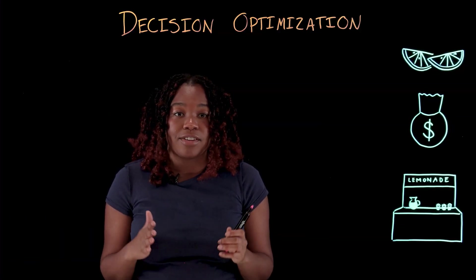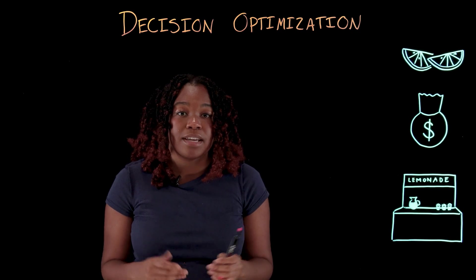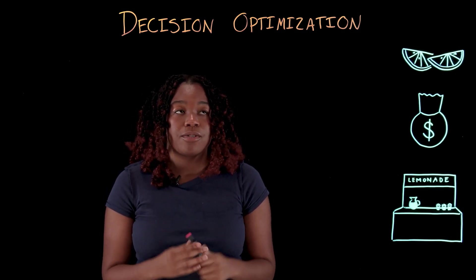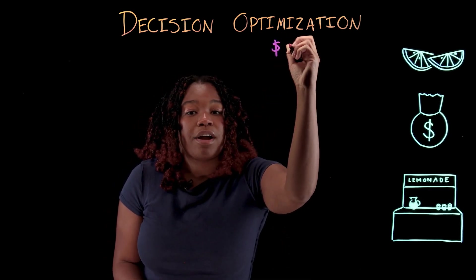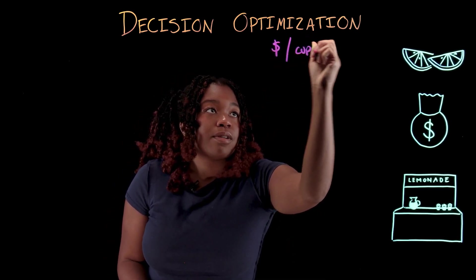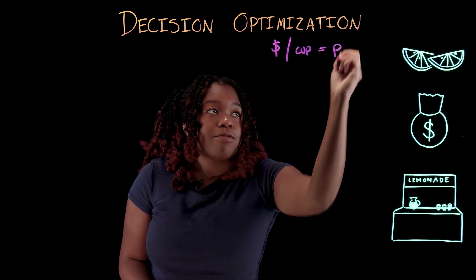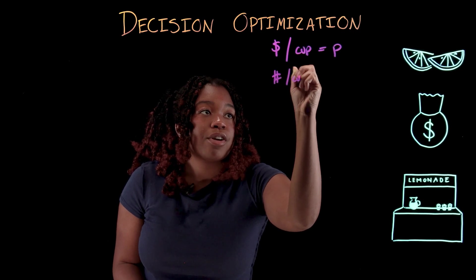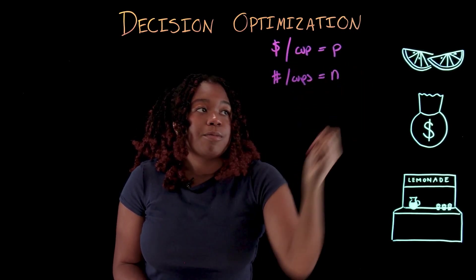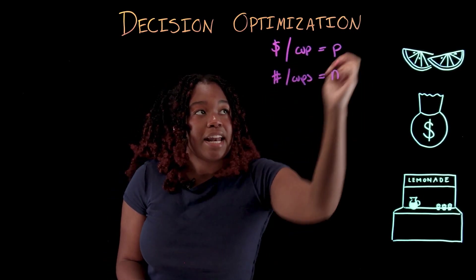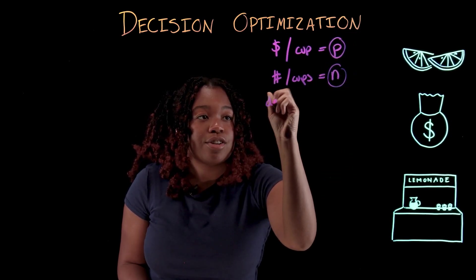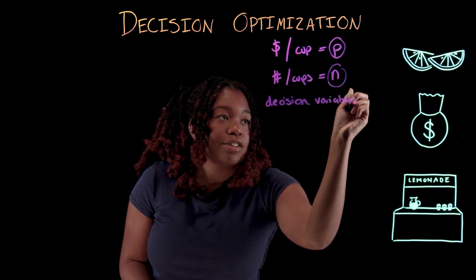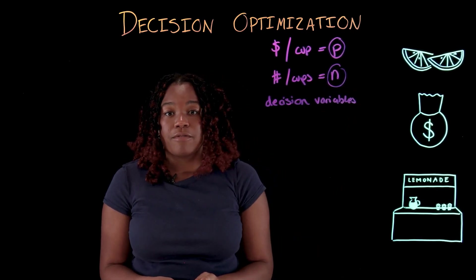Let's write this lemonade stand scenario as a decision optimization problem. The first thing we'll need to do is identify the problem and define the variables. We'll need to decide what the price per cup of lemonade is, and we can define that as a variable P. We'll also need to determine the number of cups of lemonade to sell, which we'll set as a variable N. P and N are going to be our decision variables — the variables that we can change in order to change the outcome of this problem.